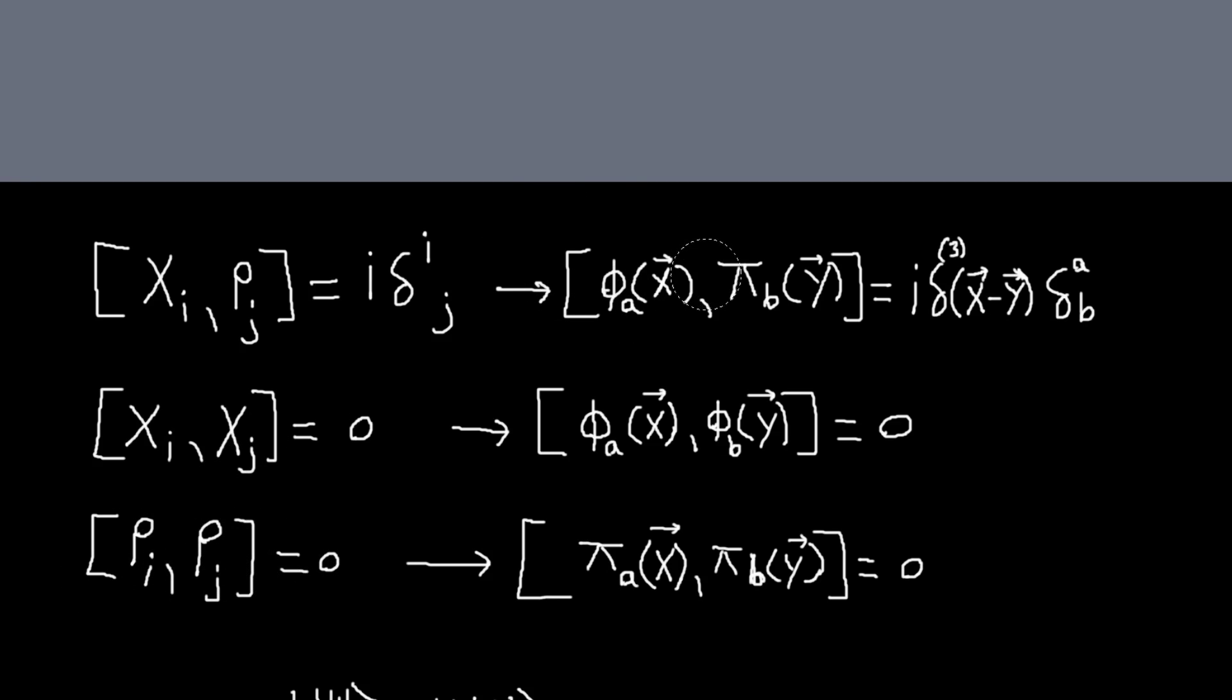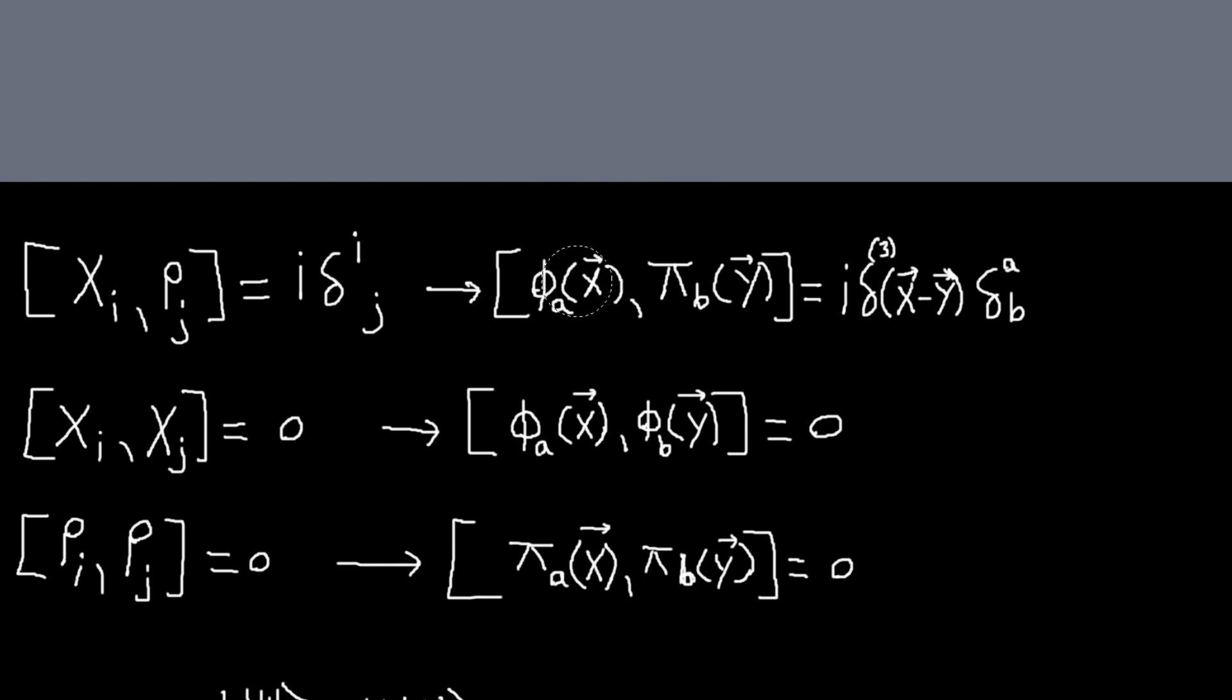So we work by analogy here. Now our field and its conjugate momentum should satisfy this relation. The commutator phi of x and pi of y should be delta of x minus y. So basically our fields become operators, operator valued functions that assign an operator to every point.